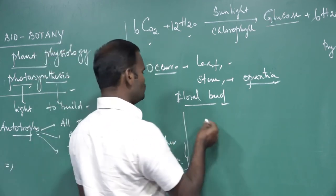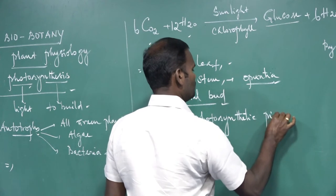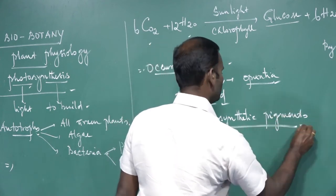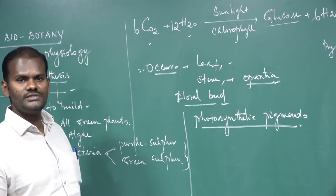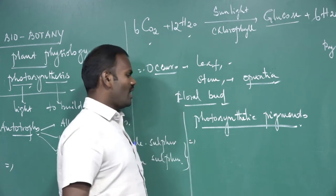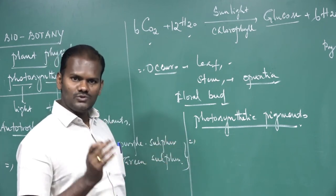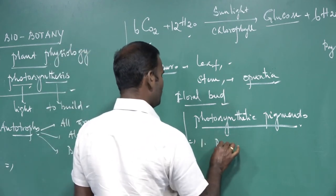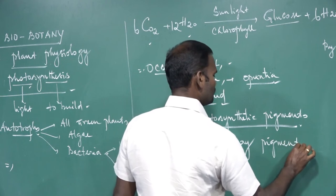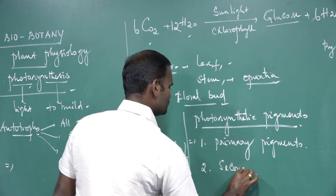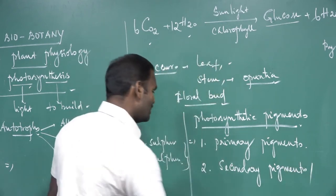The next topic is photosynthetic pigments. What are the pigments involved in photosynthesis? These are called photosynthetic pigments. Generally they are classified into two classes: one is primary pigment, and the second one is secondary pigment — also called accessory pigment.